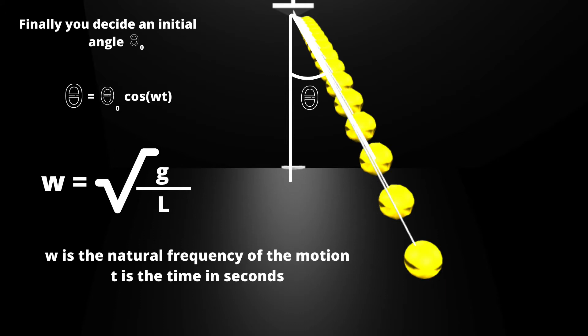Finally you need to decide what is your initial angle because the initial angle change a little bit the effects you see. Some initial angles look better than others. And the angle in time will follow the equation theta_0 which is the initial angle multiplied by cosine of wt. W is the natural frequency of the motion which is equal to the square root of g divided by L and t is just the time in seconds.